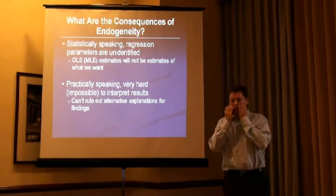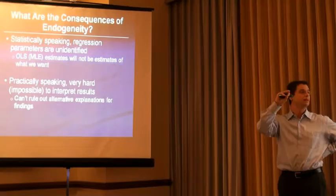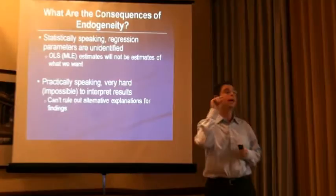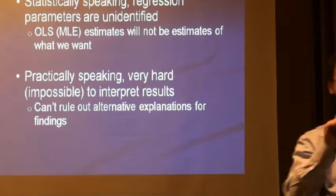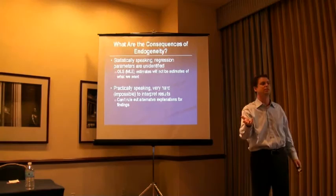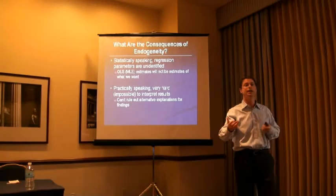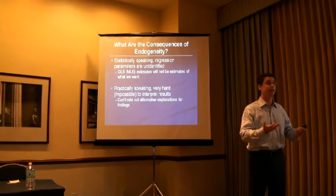So why do we care? Statistically speaking, the regression parameters beta are unidentified. When you run OLS, your estimates of your betas are not actually what you think they are — and they're definitely not what you want. Practically speaking, it just means it's really hard to interpret your results, because your results could be consistent with any number of hypotheses. You can't rule out alternative explanations. That's a problem if the goal of the study is to answer a specific question, especially in the face of competing explanations.